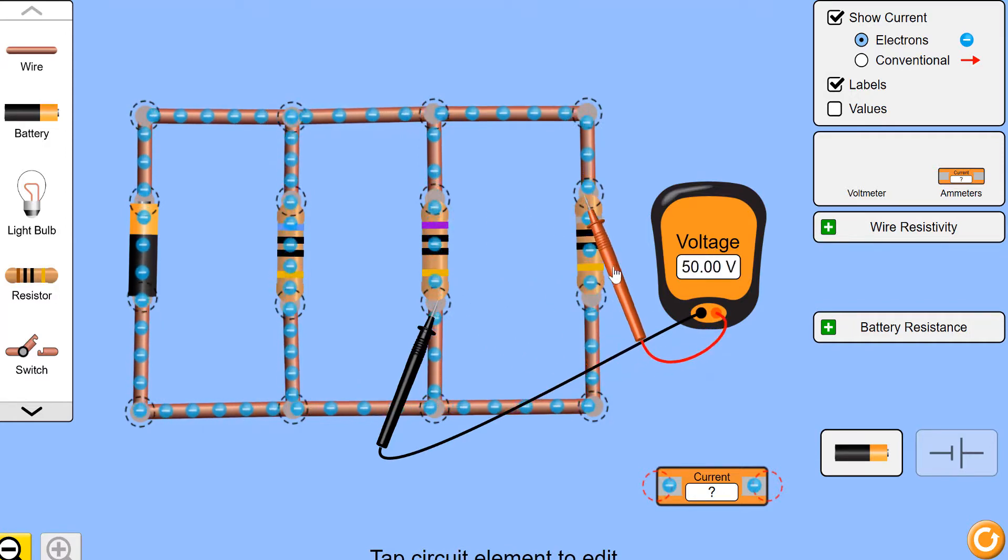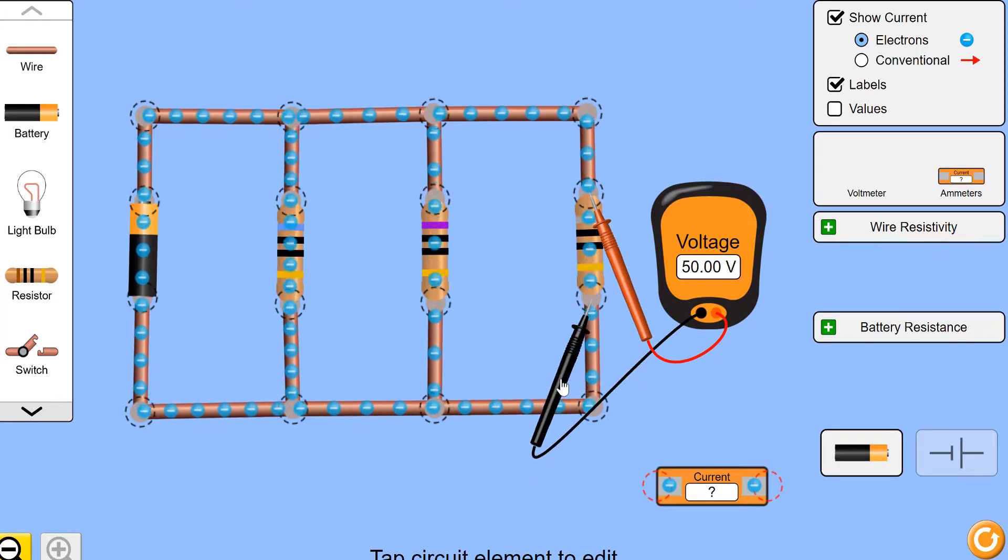And then I can move over and measure the potential difference across R3, the third resistor in my circuit. So I get the potential difference across the battery and each of the resistors in the circuit.